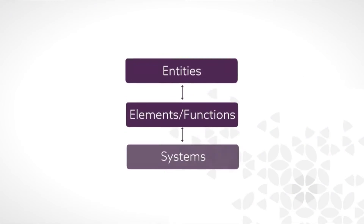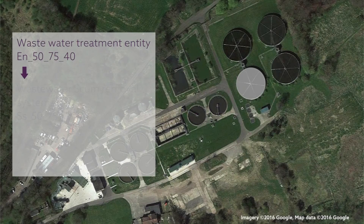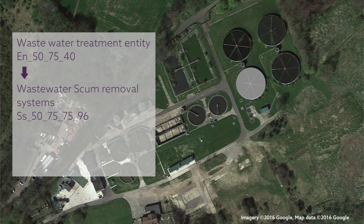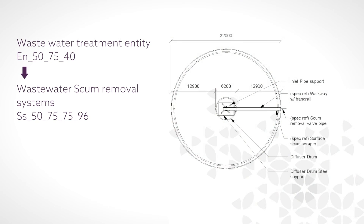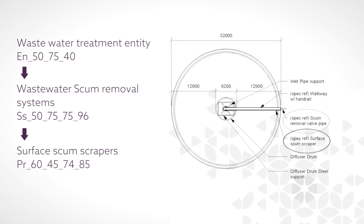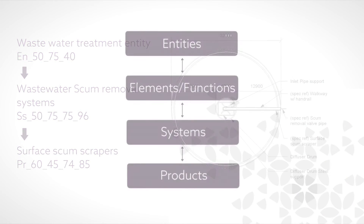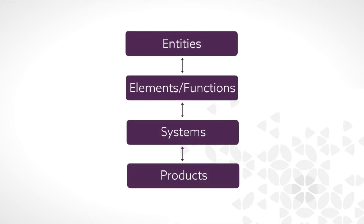The entities themselves, such as for example the wastewater treatment tank or structure, include a number of different systems such as sludge removal systems. The system for scum removal is made up of a number of components or products including scum scraper boards, pipes and valves. All these can be described within each of the different tables, either system or product.